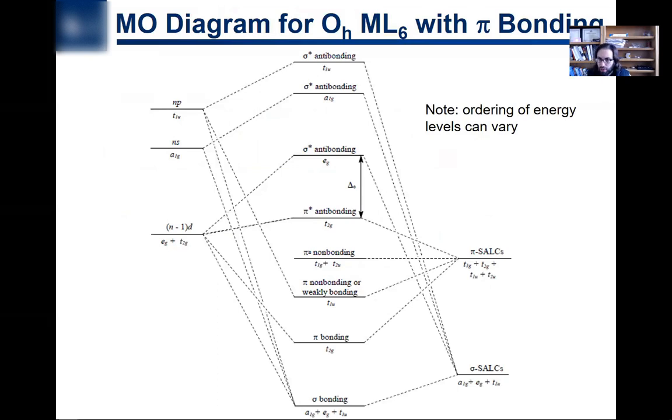Ligand field theory all has to do with the MO diagram that we talked about in the last video. And now we hopefully understand the factors: pi donating, pi accepting, sigma donating, things, factors, parameters that can give rise to different delta O values. If we're talking about octahedral complexes, and of course, if we're talking about complexes with other geometries, we could, in a similar way, predict how the energies would change as we change the parameters of the ligand field.